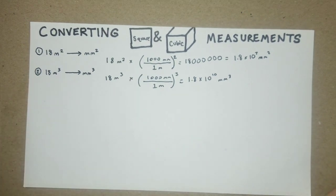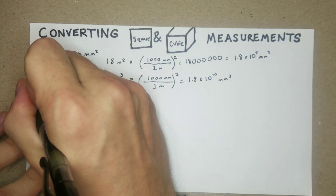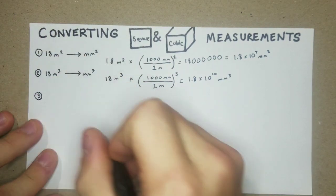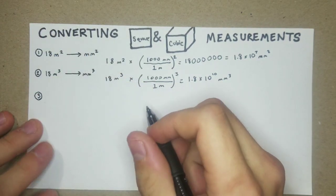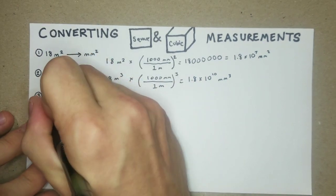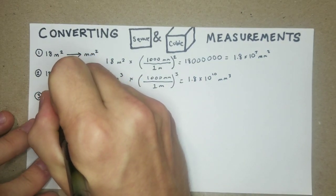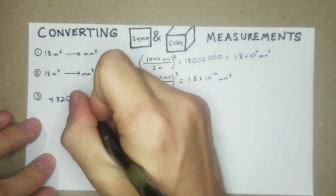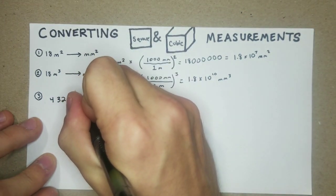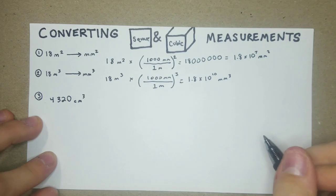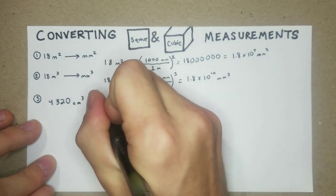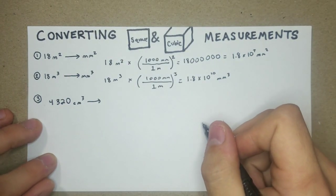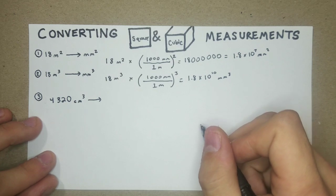Okay, now we're going to jump down to a new type of problem. We're going to try to convert from, let's see here, say 4,320 cubic centimeters, and we'll try to get that into cubic feet.